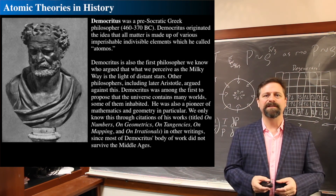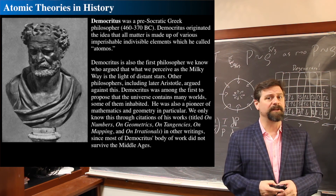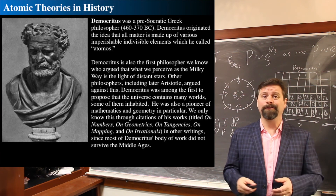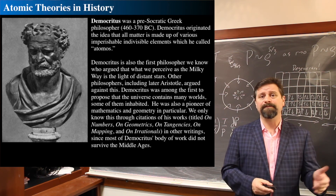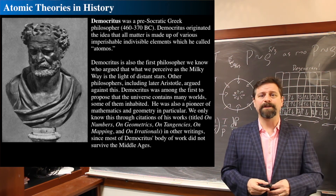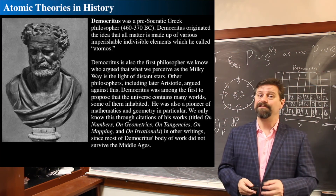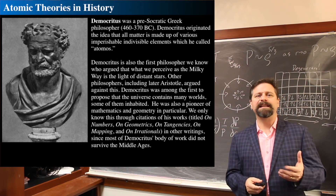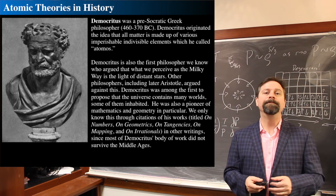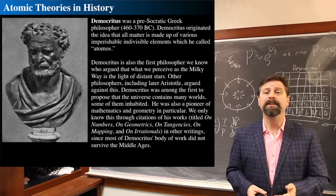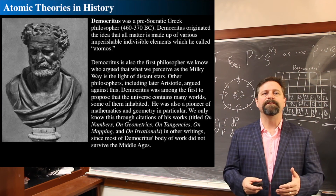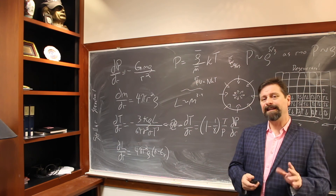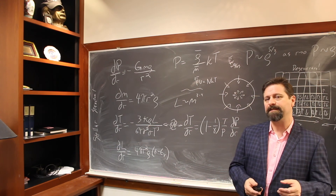Democritus himself is referenced throughout much of antiquity's literature. However, a lot of his works do not survive because he was on the outs with medieval theology. He disagreed with Plato and Aristotle on key ideas, so his work was excluded throughout history. But we know he alluded to the concept of the atom, and also to the idea that the Milky Way is a series of incredibly distant stars that look like one thing.